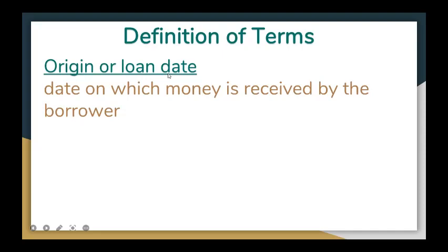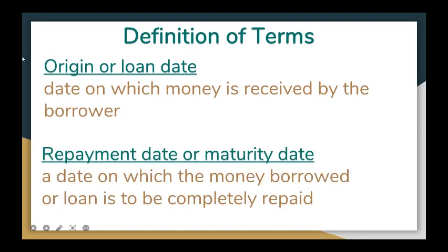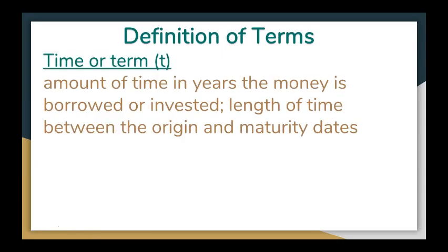Origin or loan date: this is the date on which money is received by the borrower. Repayment date or maturity: a date on which the money borrowed or loan is to be completely repaid. Now we have time or term, denoted by small letter T — the amount of time in years the money is borrowed or invested, or the length of time between the origin and maturity dates.